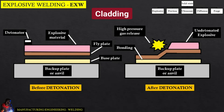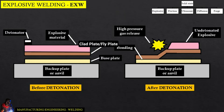The explosive welding technique has found major use for cladding low-cost plate — which is usually carbon steel — with more expensive corrosion-resistant materials. This clad plate is typically used in the chemical and petrochemical industries as tube sheet for heat exchangers.